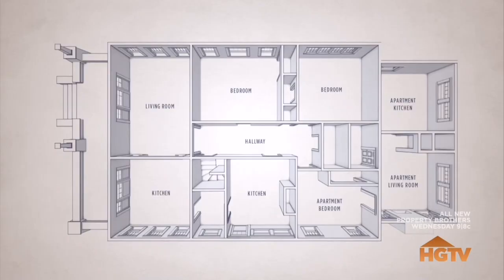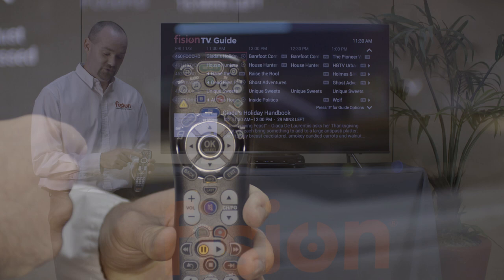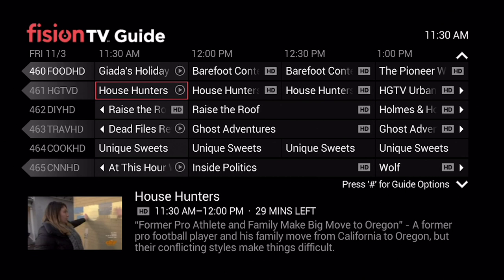To select a program to watch, we're going to start by pressing Guide. From our guide, we can use our directional arrows to go up and down line by line, or we have the channel up and down buttons that will go page by page. Once we find the show that we want to switch to, we'll simply press OK.